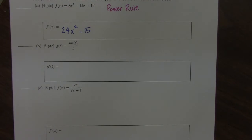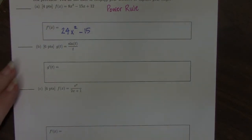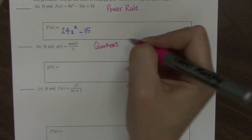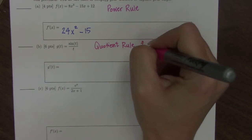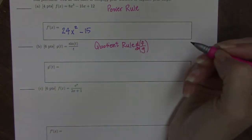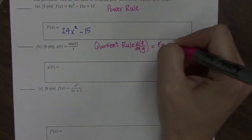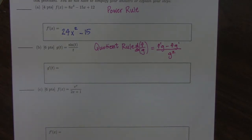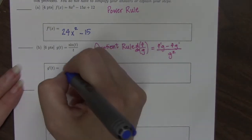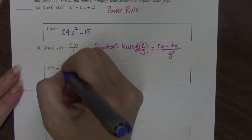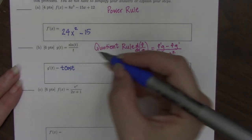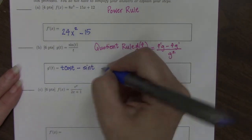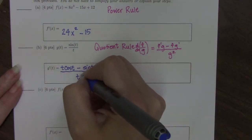The second part says find the derivative of sine of t over t. So this is going to require a quotient rule. If you have a numerator and a denominator, it's the derivative of the numerator times the denominator, minus the numerator times the derivative of the denominator, all over the denominator squared. So the derivative of the numerator — the derivative of sine is cosine — times the denominator, which is just t. We'll move the t out front. Minus the numerator times the derivative of the denominator, which is just 1, all over the denominator squared.